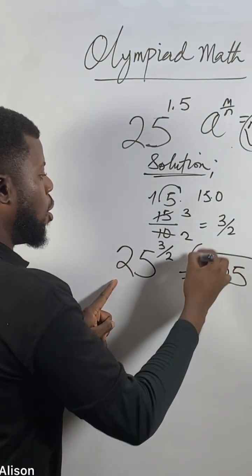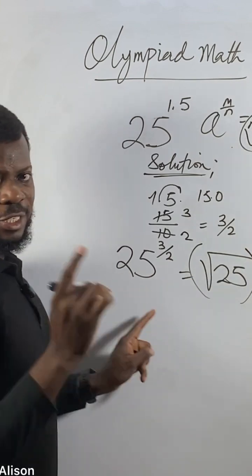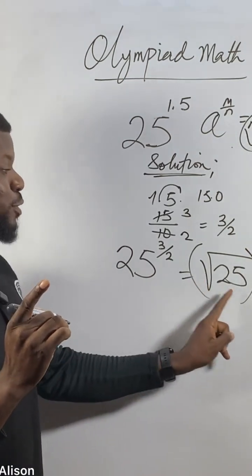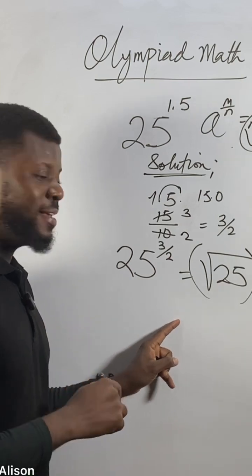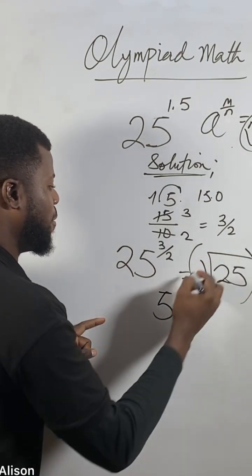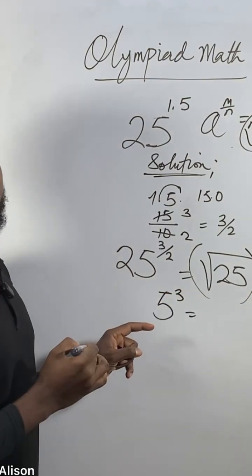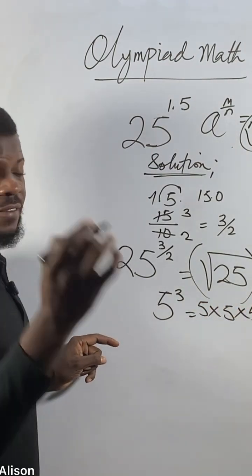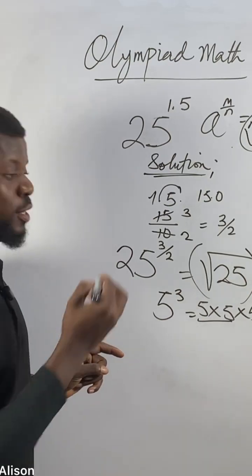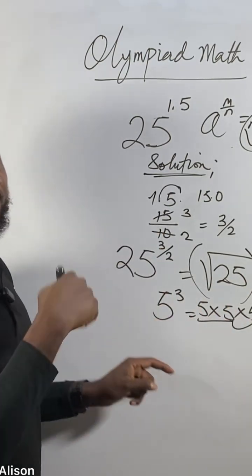Square root of 25 is 5. So we have 5 raised to the power of 3, which means 5 times 5 times 5. 5 times 5 is 25. 25 times 5 is 125.